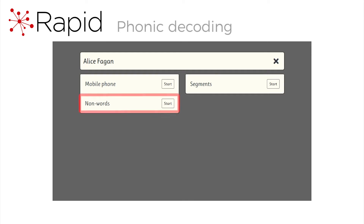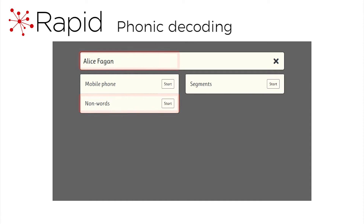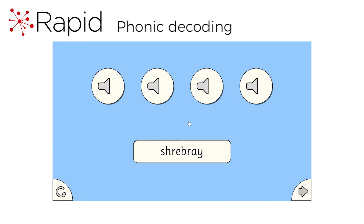Now let's look at the test of phonic decoding. This student is also 14 years old, so she will see the non-words game. Welcome to the non-words game. Strange words will appear in the middle of the screen. Choose the speaker which says the word correctly, then use the arrow to move on.